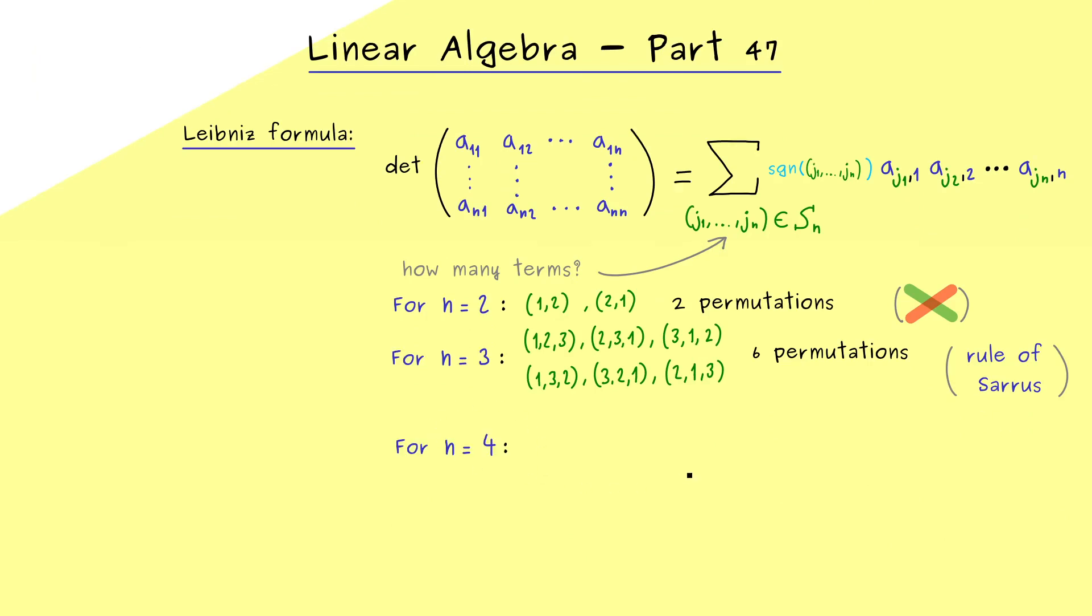However as a warning I can already tell you this mnemonic here is not applicable to n equals 4. Simply because we have way too many permutations now, because if you count them you find 24. Indeed you should recognize the general rule to count all the permutations is given by n factorial. So you see the factorial comes in here very naturally. Moreover then you should see the numbers here really explode if n increases.